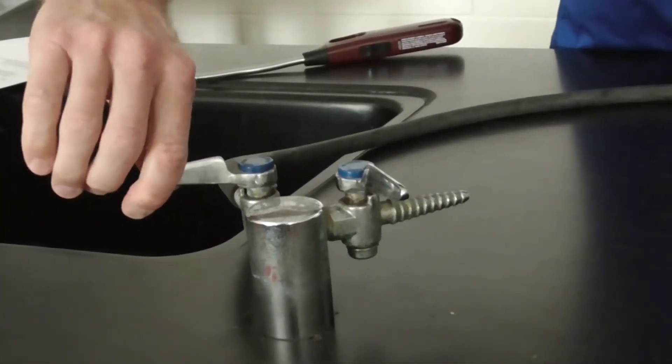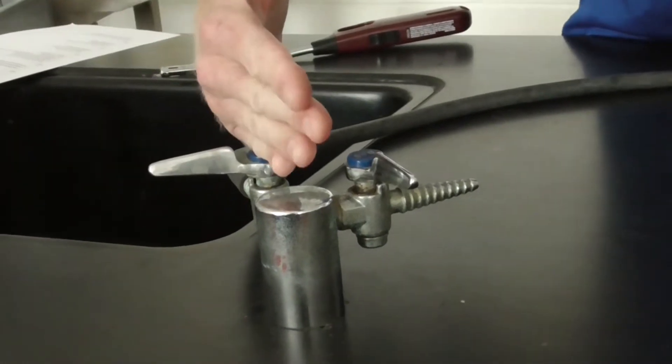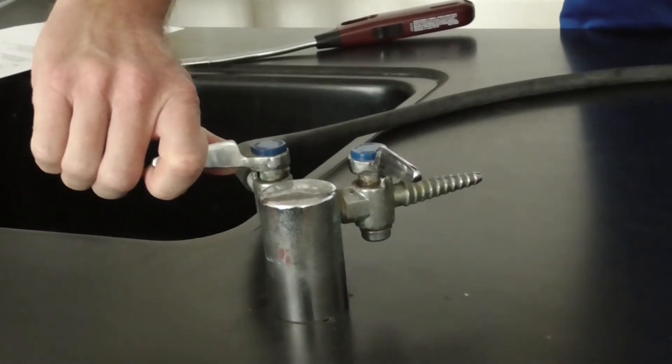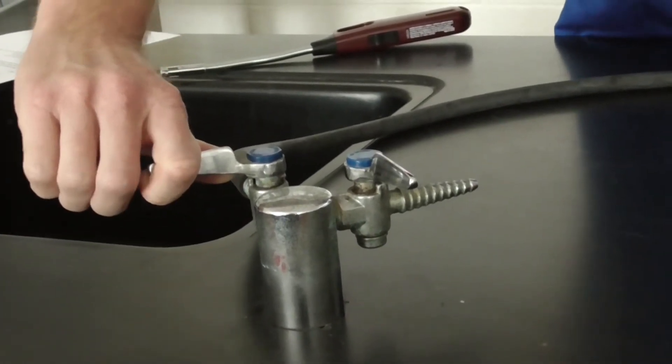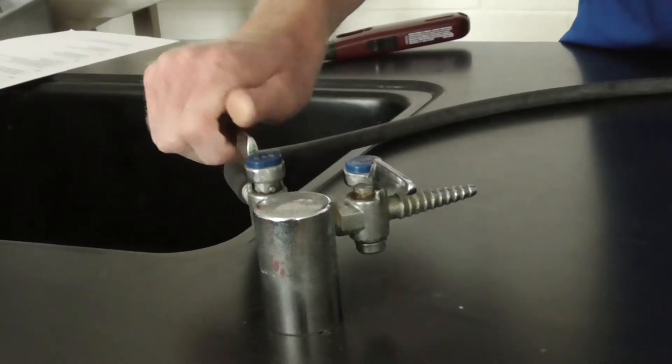The gas jet has a handle. When the handle is turned perpendicular to the gas jet, the gas is off. To turn the gas on, you would turn the handle parallel with the gas line.